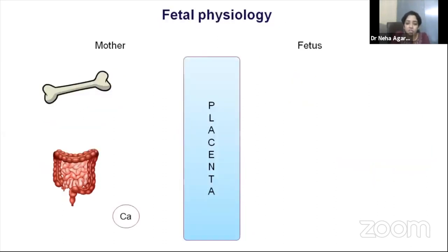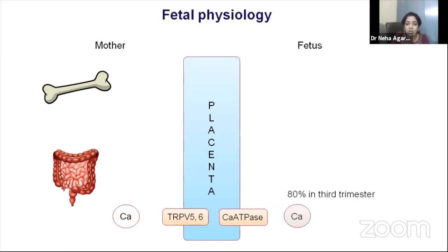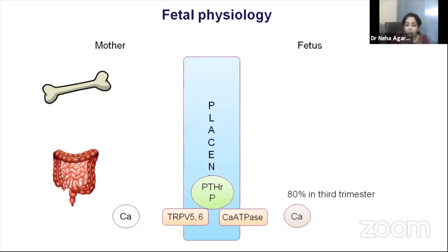Regarding fetal physiology, transplacental transfer of calcium from mother to fetus occurs via channels such as TRPV5, TRPV6, and calcium ATPase, ensuring calcium moves against a gradient from mother to fetus — maintaining normal fetal calcium even if maternal calcium is low. About 80% of calcium accrual takes place in the third trimester, so premature newborns are at higher risk of developing hypocalcemia. PTHrP, produced by the placenta, ensures calcium movement from maternal to fetal side against a gradient of 1.4:1.